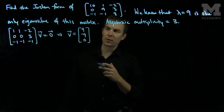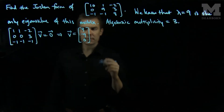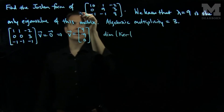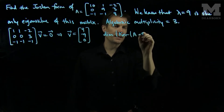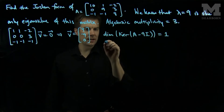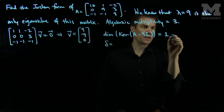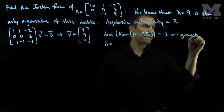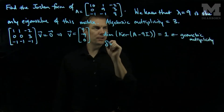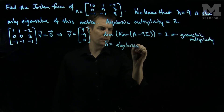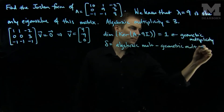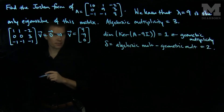I could have also chosen (1, negative 1, 0) or (3, negative 3, 0), but this will help with the algebra a little bit. Furthermore, this is the only eigenvector, so the dimension of the kernel of A minus 9 times the identity is equal to 1, which is the geometric multiplicity. The deficiency delta is the difference: algebraic multiplicity minus geometric multiplicity, so the deficiency of this eigenvalue is equal to 2 in this example.